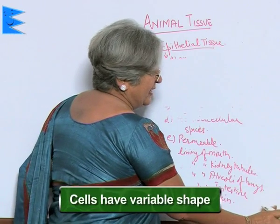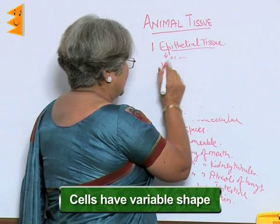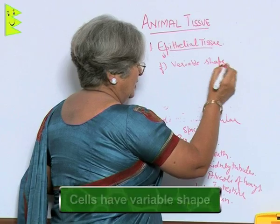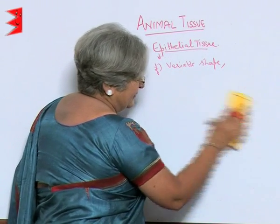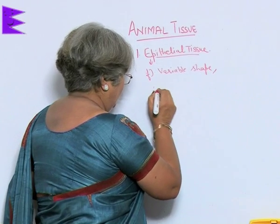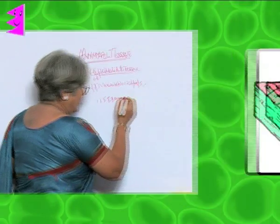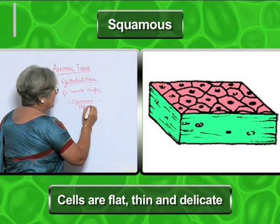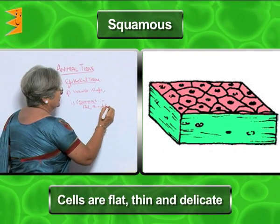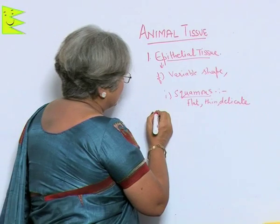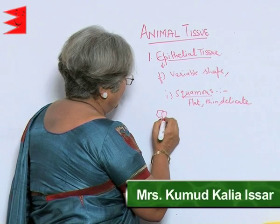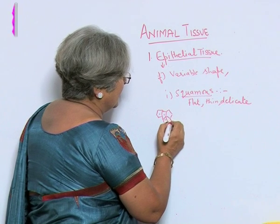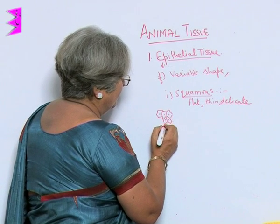Epithelial tissue is mainly the covering tissue. Another feature is that the shape of the cell varies, so you can say it has a variable shape. Squamous epithelial tissue means the cells are flat, thin, and delicate — your cheek cells are like that, with very little thickness.